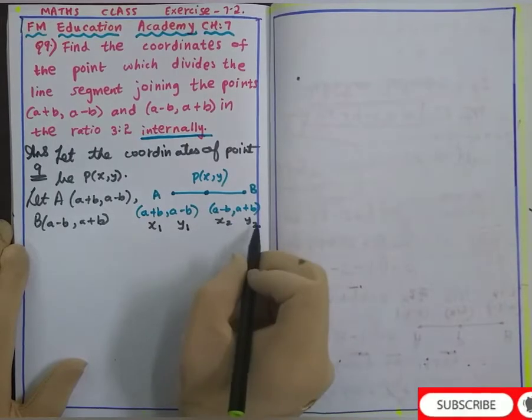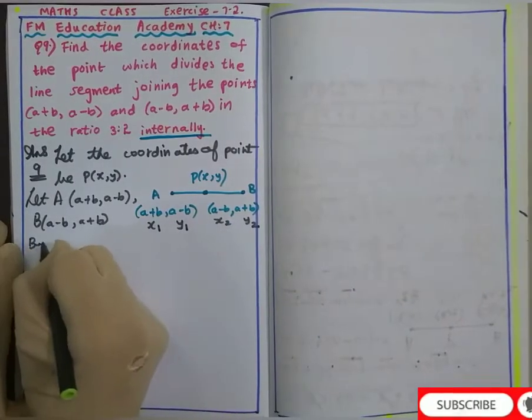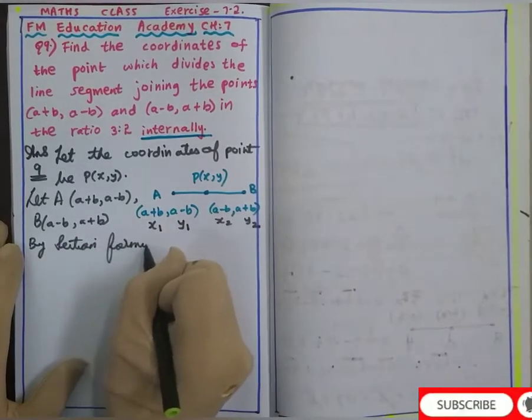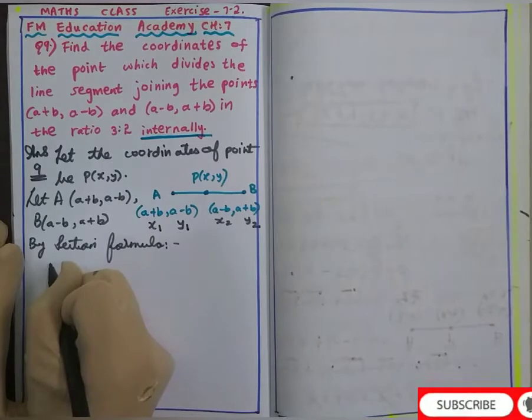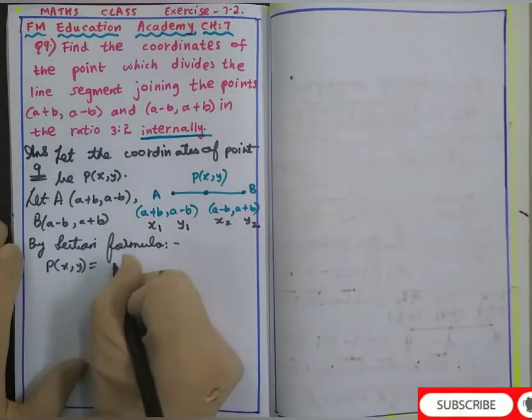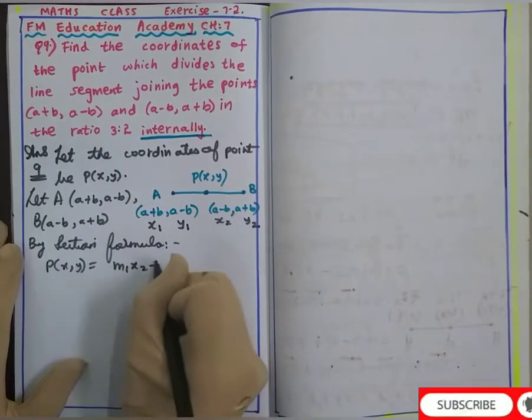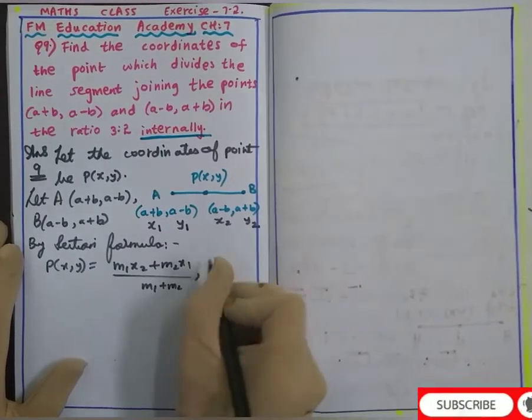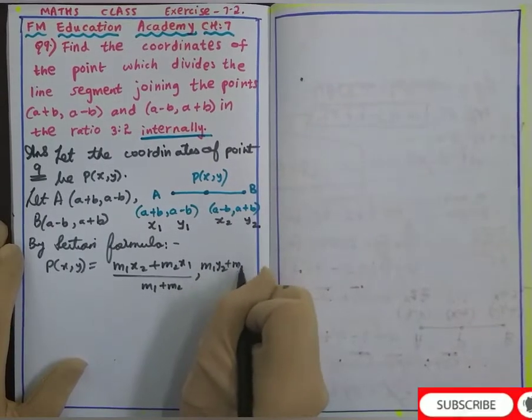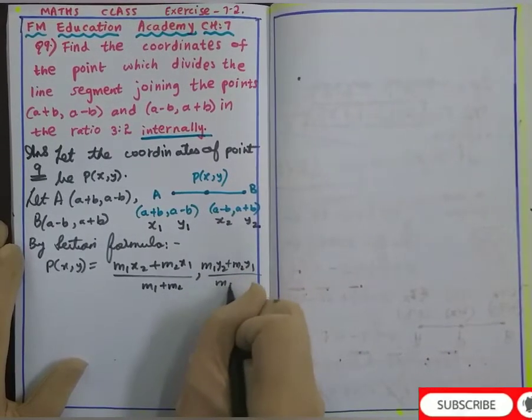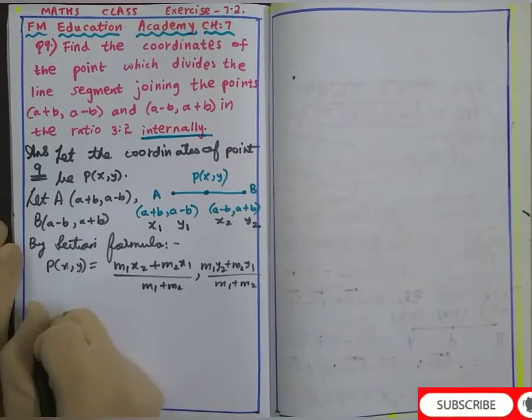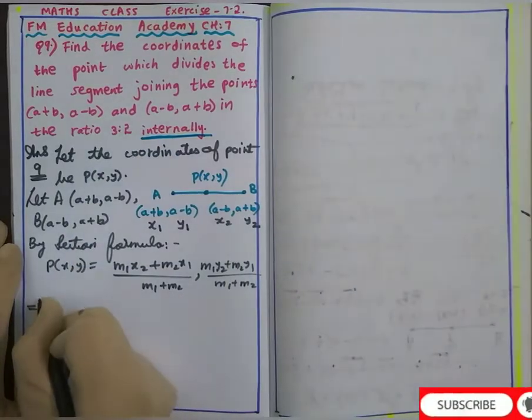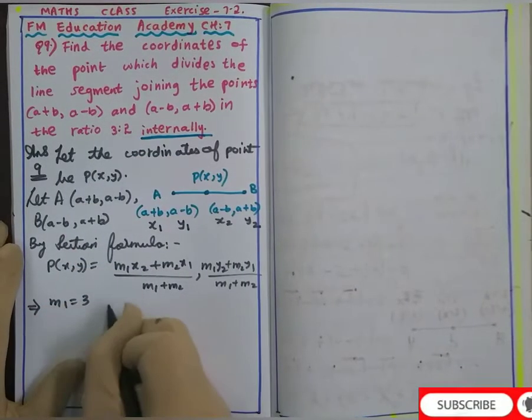By section formula, P(x,y) equals m1x2 + m2x1 by m1 + m2 comma m1y2 + m2y1 by m1 + m2. The ratio m1:m2 is given as 3:2, so m1 is 3 and m2 is 2.